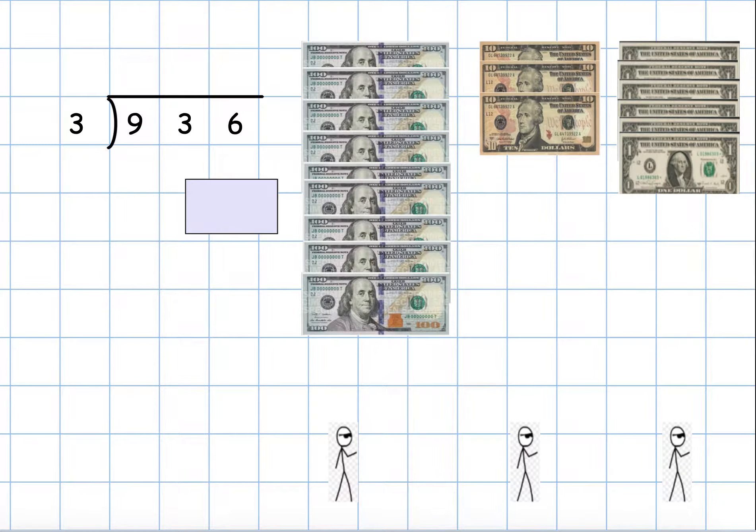So let's take a look at the long division that we were doing with the money. In this case, I have $936, and I'm going to share it with three friends.